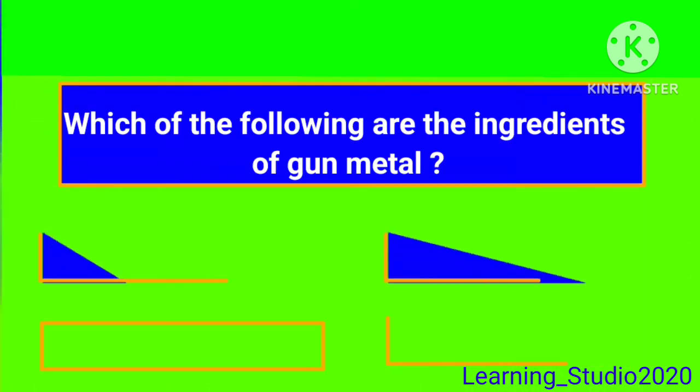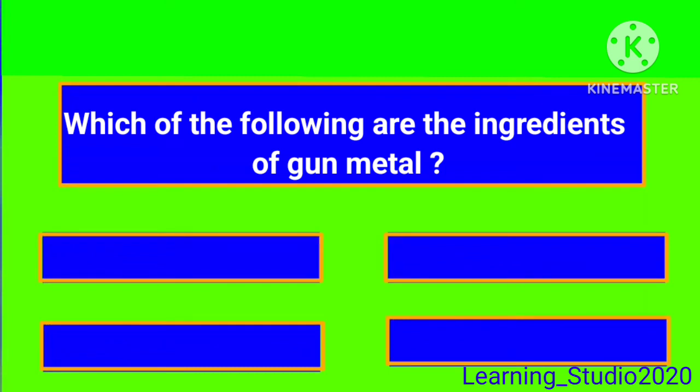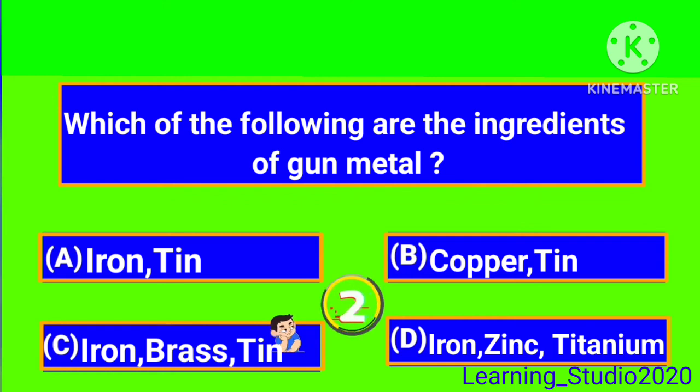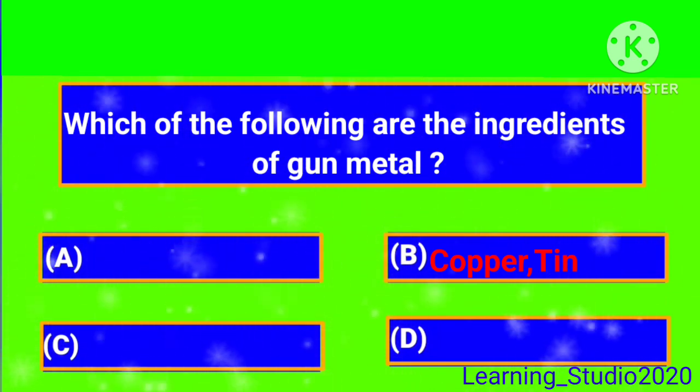Which of the following are the ingredients of gun metal? It is copper tin.